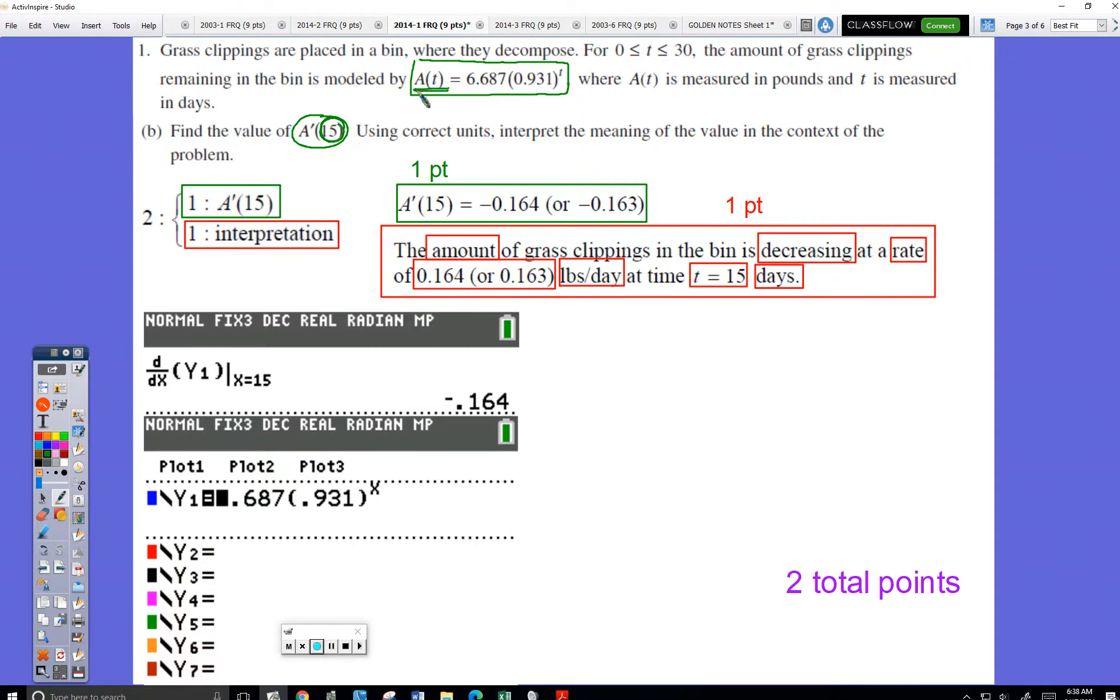This is a calculator problem. So all I do is type this green box into my calculator as shown here. I find the derivative of A on day 15, write that down like you see here, and that is worth one point.